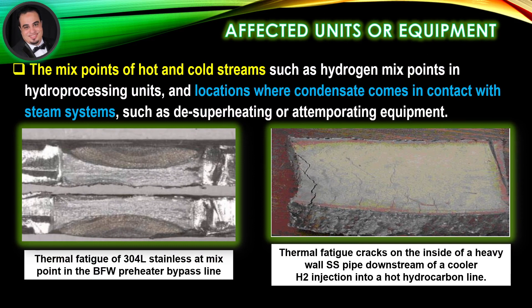Affected units or equipment examples include the mix points of hot and cold streams, such as hydrogen mix points in hydroprocessing units, and locations where condensate comes in contact with steam systems such as superheating or temperating equipment. This includes thermal fatigue of 304L stainless at a mix point in the BFW preheater bypass line, thermal fatigue cracks on the inside of a heavy wall stainless steel pipe downstream of a cooler, and hydrogen injection into a hot hydrocarbon line.